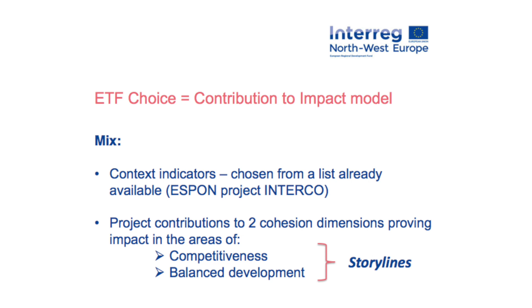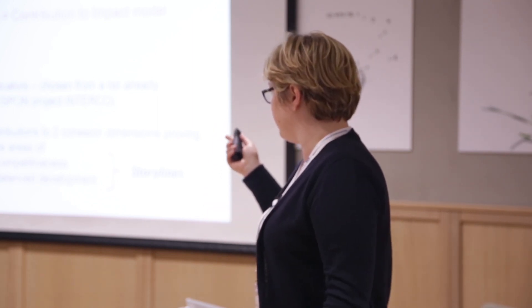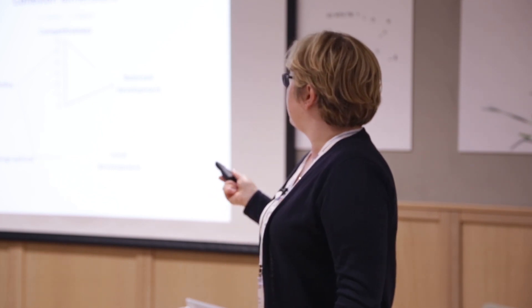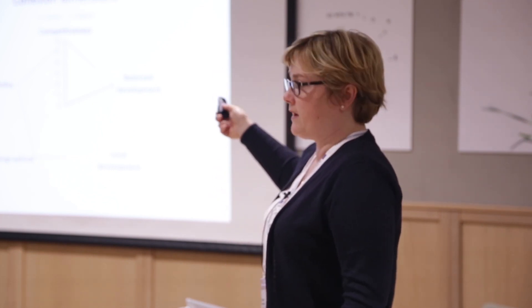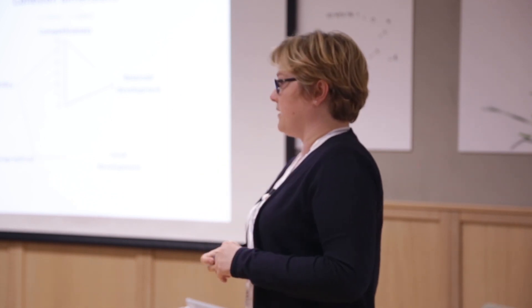Those existing indicators from the list of 600 would be called the context indicators. And then we would look into the project contributions into the cohesion dimensions which are most interesting for our MC members, namely competitiveness and balanced development. These would serve later as the so-called storylines for impact evaluation. The cohesion dimensions as such were outlined by the consultants as competitiveness, balanced development, local development, the geographical aspects and policy aspects - very, very broad. Our MC members said that they would first of all be interested in competitiveness, but also balanced development.